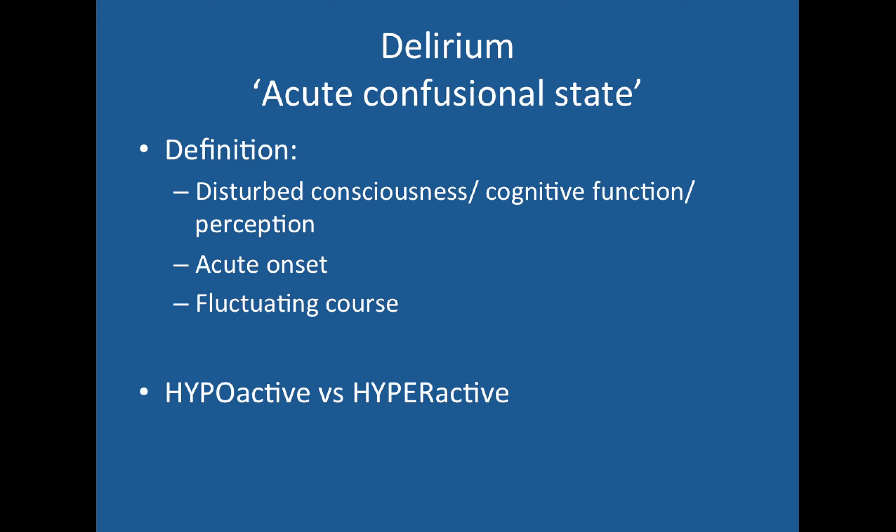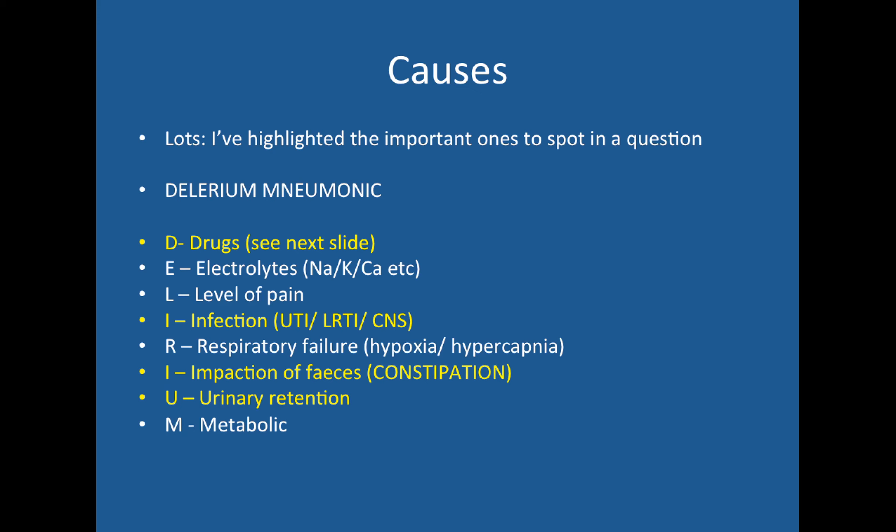The most important things are that this is acute — it's not a chronic process like dementia — and it fluctuates hour to hour and day to day. Patients often exhibit something called sunsetting, where delirium patients get a lot worse and more hyperactive during the evening, which is when you tend to get bleeped to them. I'll talk about hypo and hyperactive delirium in a minute.